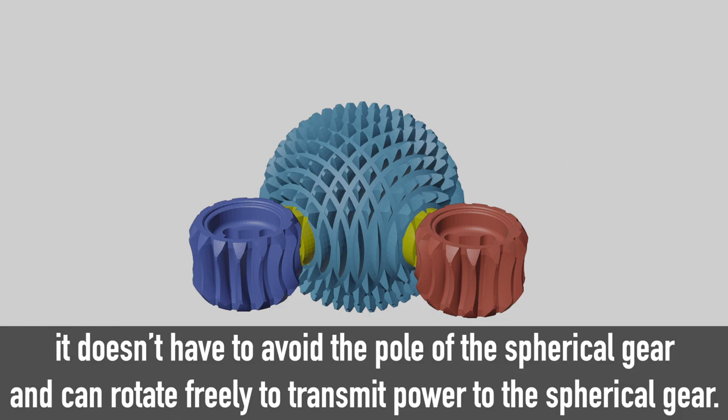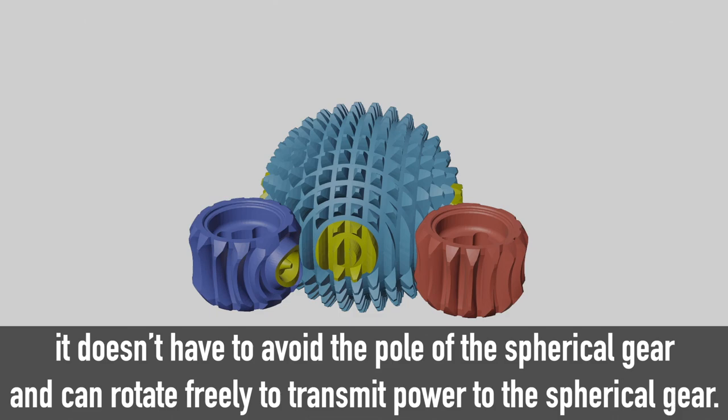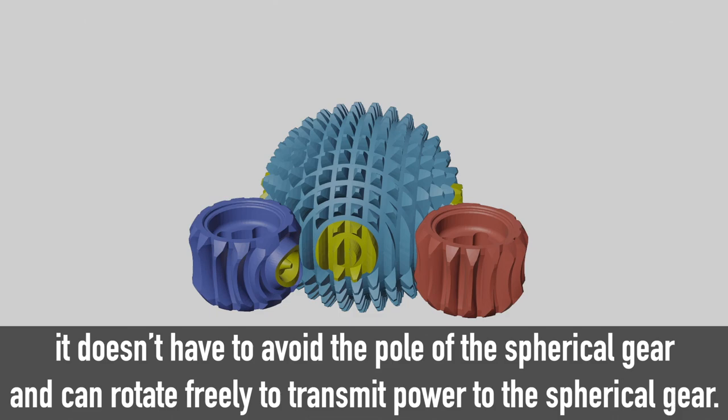With this pole on the monopole gear, it doesn't have to avoid the pole of the spherical gear and can rotate freely to transmit power to the spherical gear. This is the most important geometrical point of the spherical gear and the monopole gear to realize active three degrees of freedom.